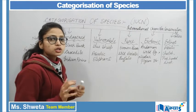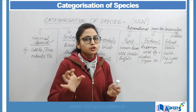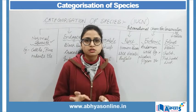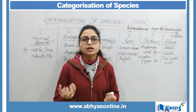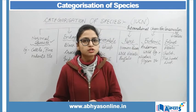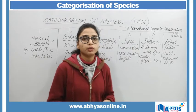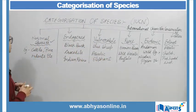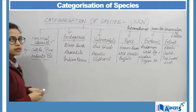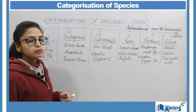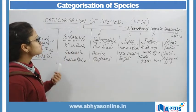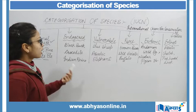Normal species वो species हैं जिनकी conditions अभी normal है। यह N number of existence में हमें देखने को मिल रही हैं, यानि इनके ऊपर अभी कोई खतरा नहीं है। इनकी survival conditions possible हैं world के ऊपर। इसके examples हैं cattle, pine, rodents, etc. मतलब यह N number of years तक अभी world में survive कर सकेंगी।